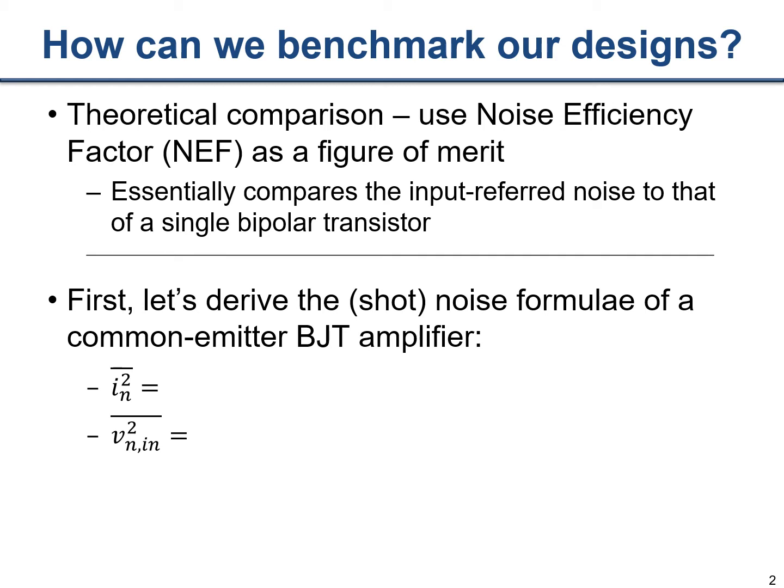The figure of merit we're going to talk about today is called Noise Efficiency Factor (NEF). We compare the current and the input-referred noise of our instrumentation amplifier to the input-referred noise of a single bipolar transistor. BJTs are dominated by shot noise, so the current noise of a BJT is the same as for a sub-threshold MOSFET: 2Q·I_C·ΔF, where I_C is the collector current.